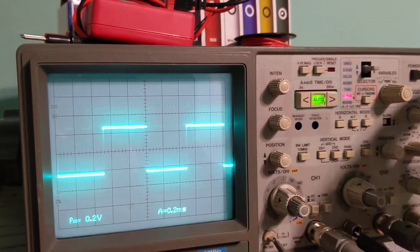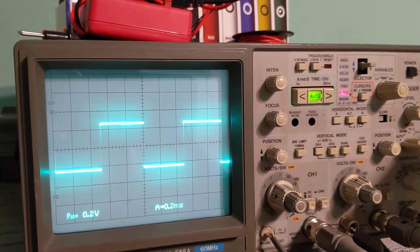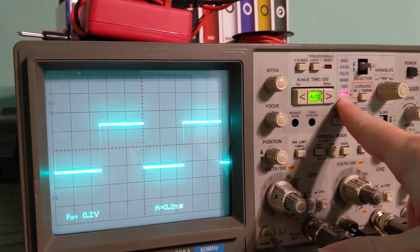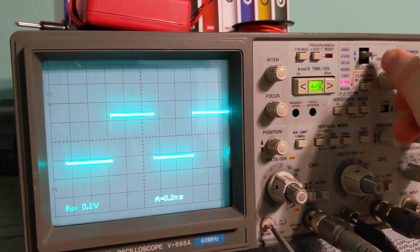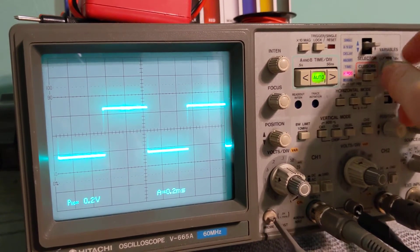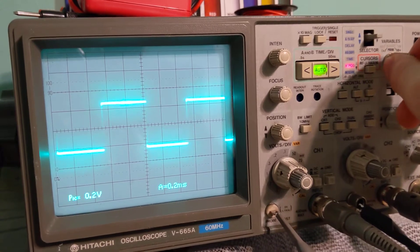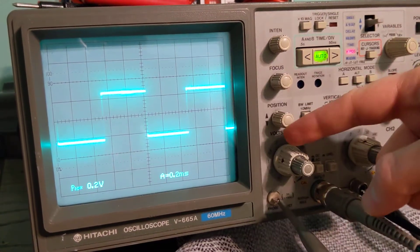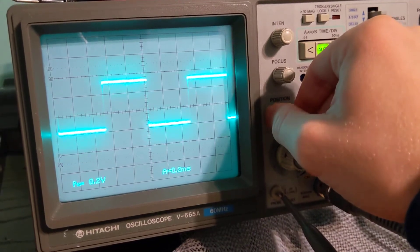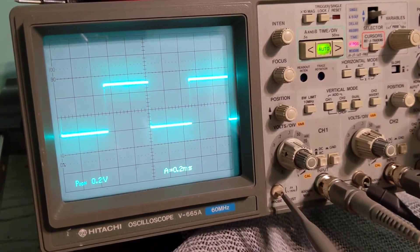First thing I'm going to do is put the time on auto. That got me my square wave. Notice I'm on horizontal position - that means this does the horizontal position, so I'll line it up wherever I want. This does the vertical position.